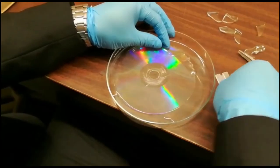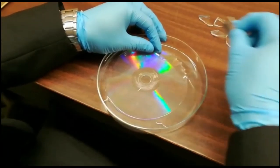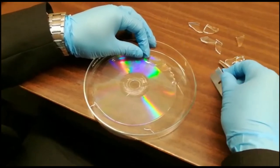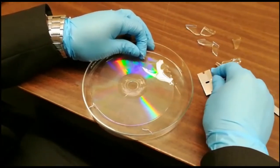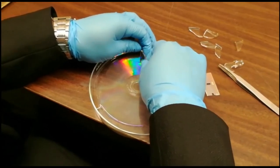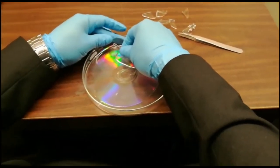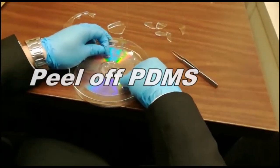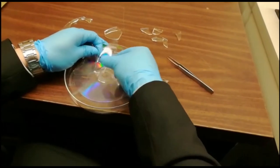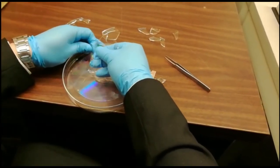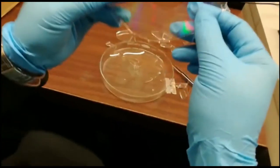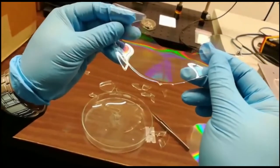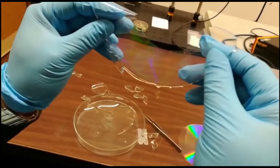We use scissors and tweezers to cut the remaining PDMS on the edge, and then peel off the PDMS very slowly. We get this PDMS thin film and you can see the grating is replicated in this PDMS mold. We can demonstrate diffraction grating patterns using this PDMS with a laser.